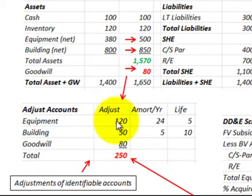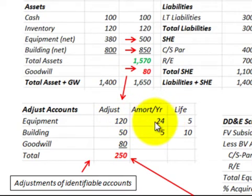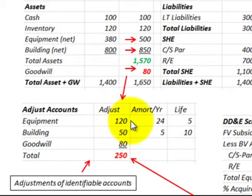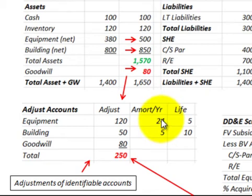We have to include our adjustment amount, and if there is any amortization or depreciation required, it has to be set up on the schedule. For our equipment, we had an adjusted value up by $120,000 with a life of five years, so we would be depreciating that at $24,000 per year.